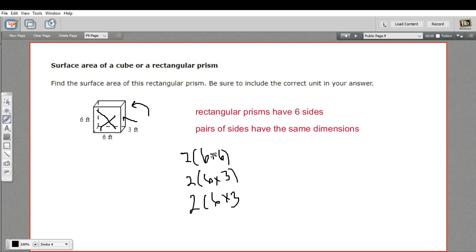And then we just do our multiplication. 6 times 6 is 36. Multiply that by 2, we're going to get 72.